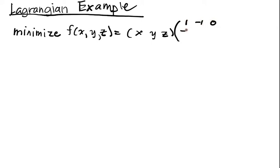So we're going to consider the problem, minimize this nice quadratic form. We'll say f of x, y, and z equals the vector x, y, z multiplied by the matrix 1, -1, 0; -1, 1, -1; 0, -1, 1